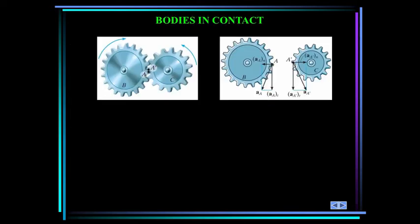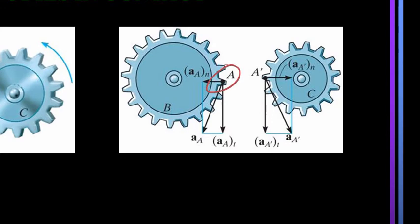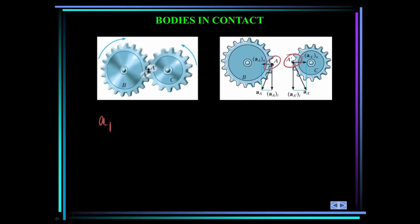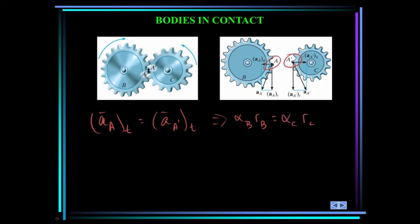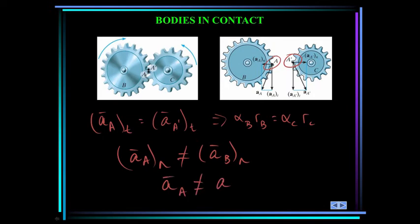Now let's consider bodies in contact, like two gears contacting each other without slipping. The points in contact — point A and point A prime — move along different paths. The tangential component of acceleration of A equals the tangential component of acceleration of A prime, which implies alpha_B times radius_B equals alpha_C times radius_C. Since these gears rotate with different angular velocities and have different radii, the normal accelerations are not the same. In general, the total acceleration of A is not equal to the total acceleration of A prime.